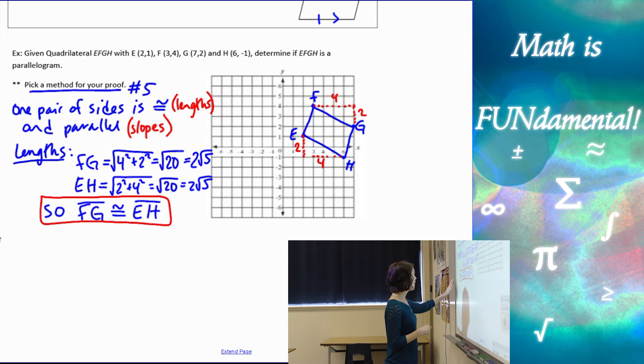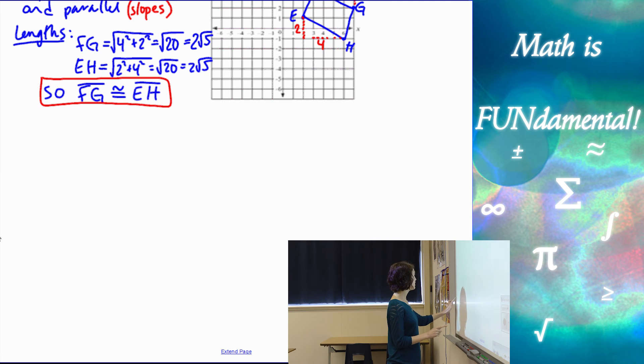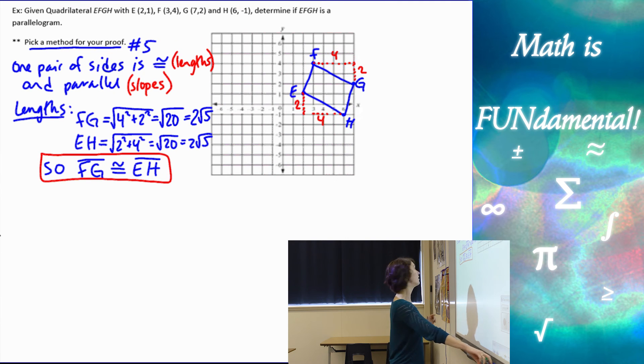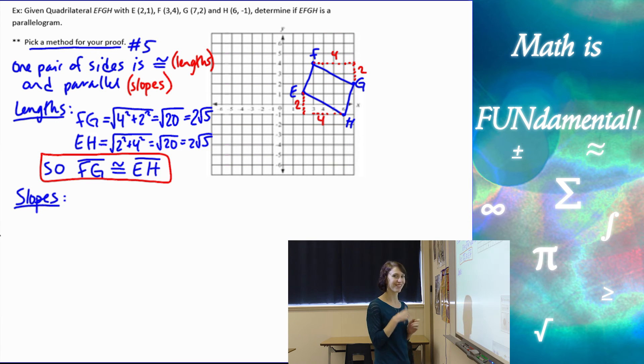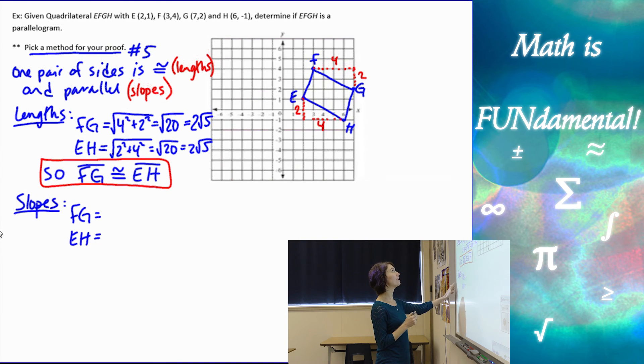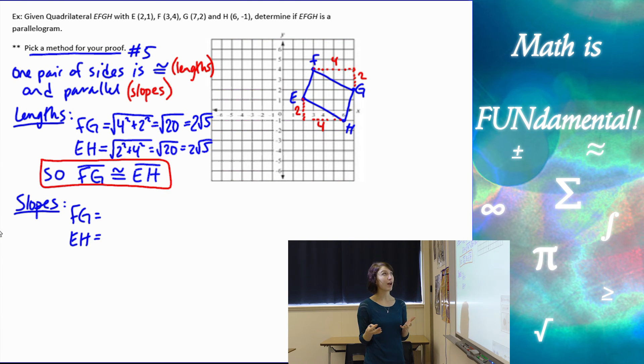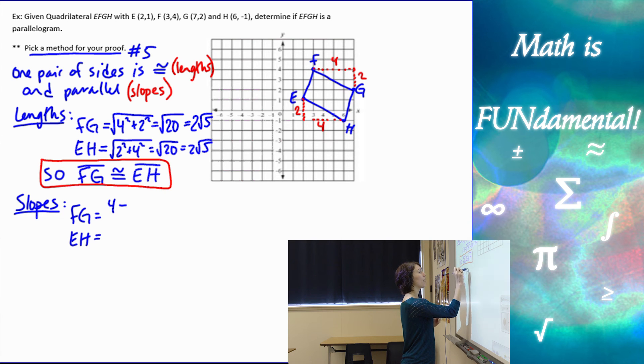Now I need the second piece, which is to find the slopes. Notice how I'm organizing and labeling all my work - it makes it easy for your teacher to grade. We find the slopes of FG and EH using our slope formula: rise over run, or y₂ minus y₁ over x₂ minus x₁.